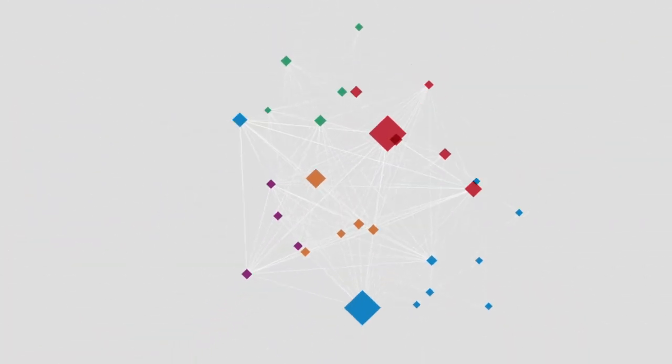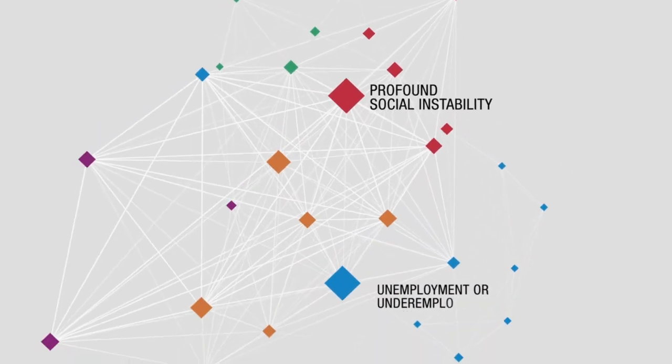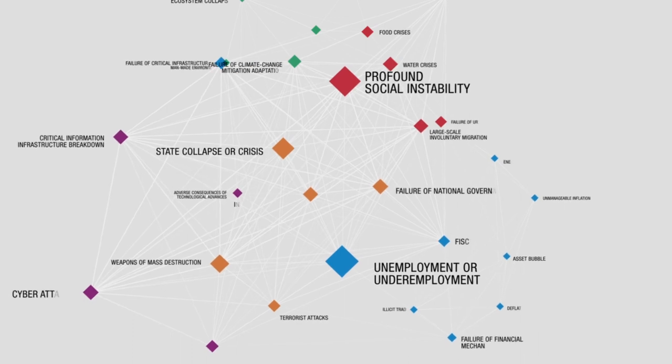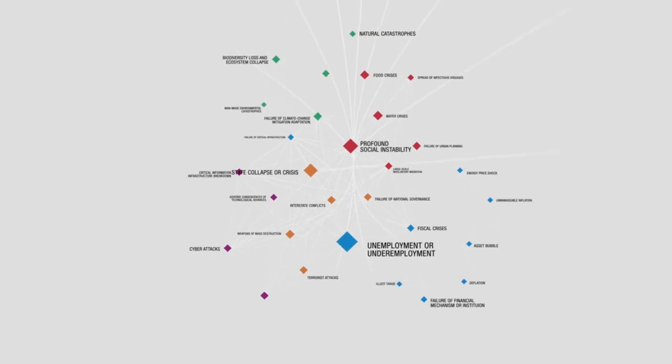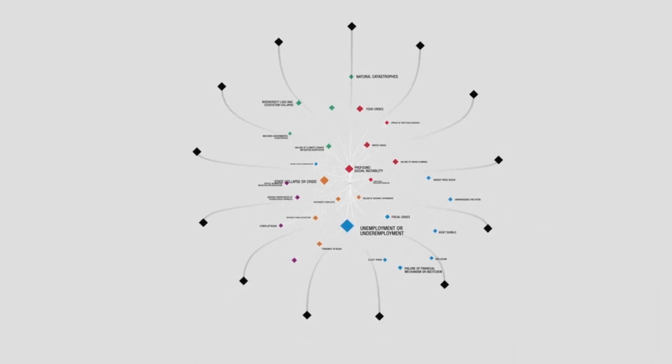Global risks are interconnected, and that can create unexpected consequences. Profound social instability and unemployment or underemployment feature as the two most interconnected risks this year. The report also explores a nexus of risks that have the most potential to threaten global stability.